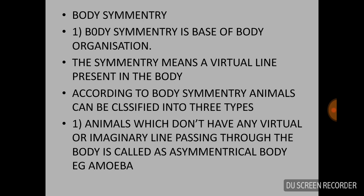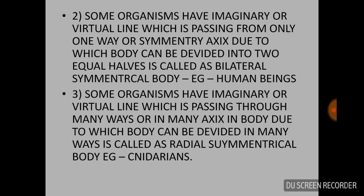According to body symmetry, animals can be classified into three types. The first type is asymmetrical body. Animals which don't have any imaginary line passing through the body that divides it into two equal halves are called asymmetrical.